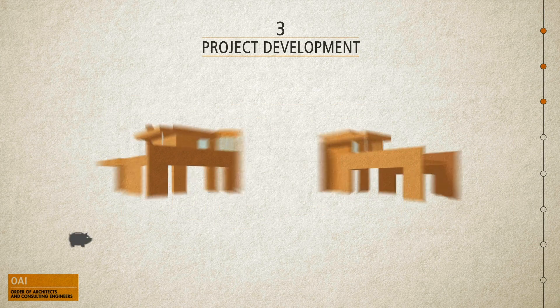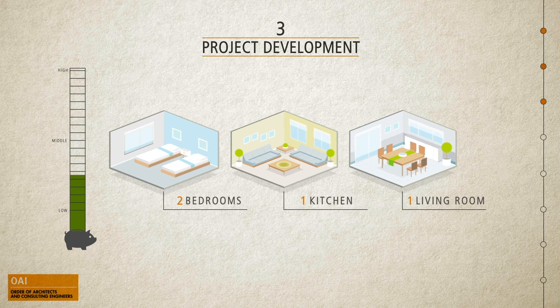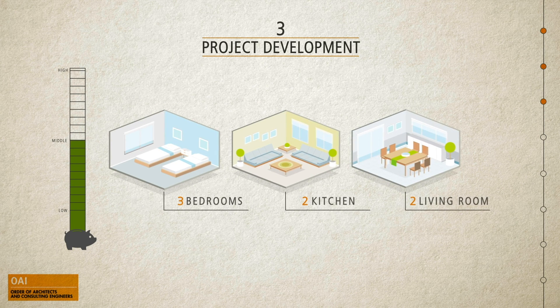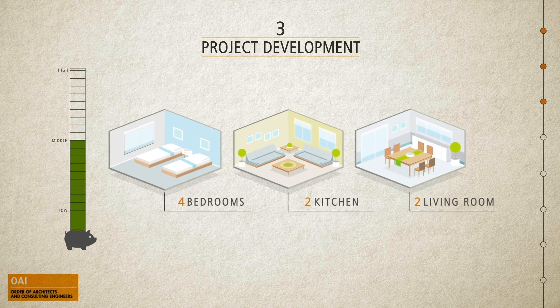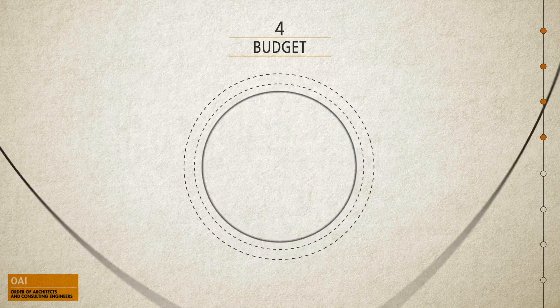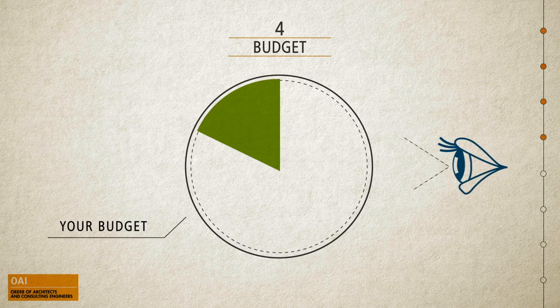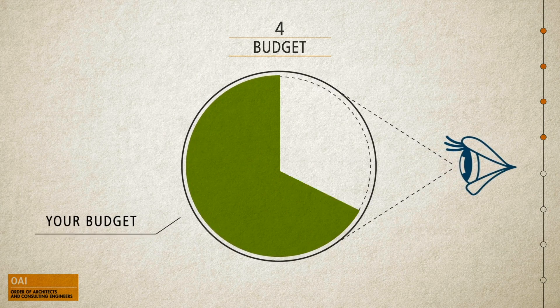The study phase defines the characteristics of your housing while taking into account the administrative constraints, your budget, and your personal context. The architect and the consulting engineer have the task to respect this budget, to warn you if you risk exceeding it, and to find adequate solutions together.